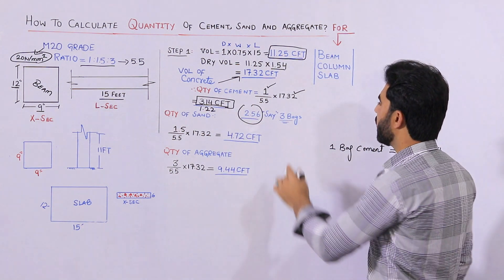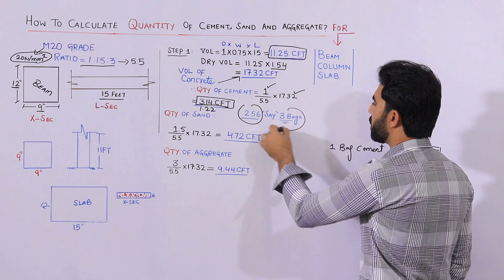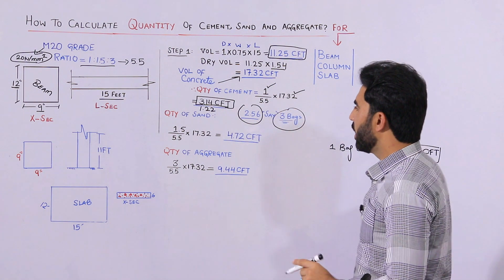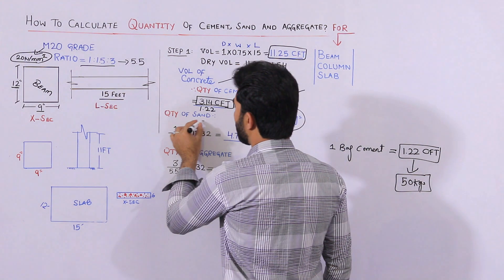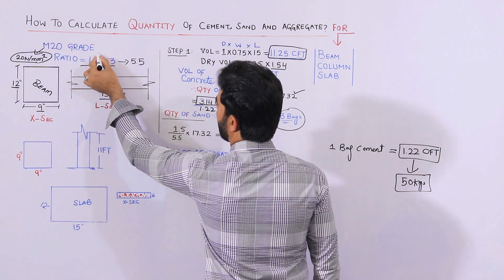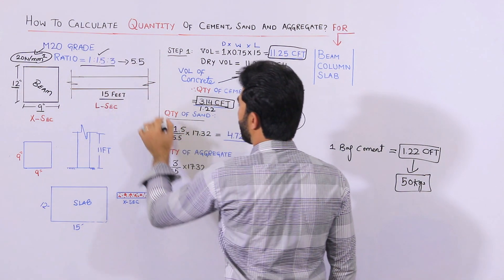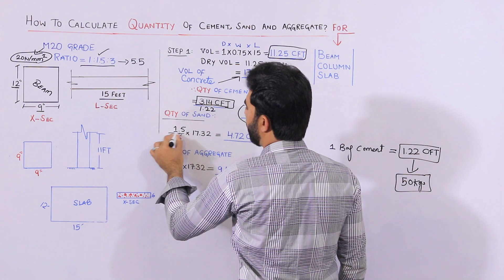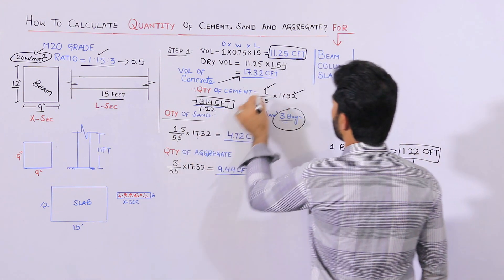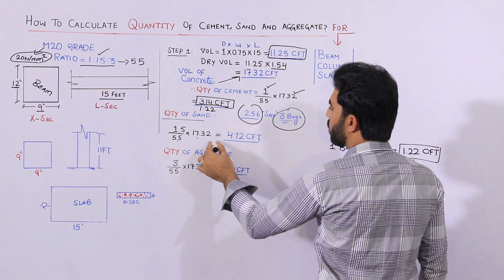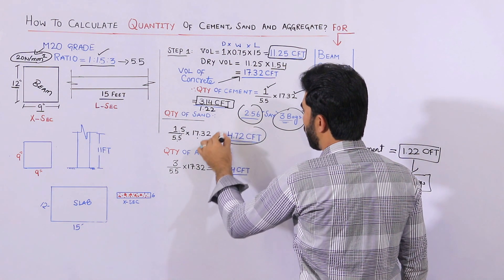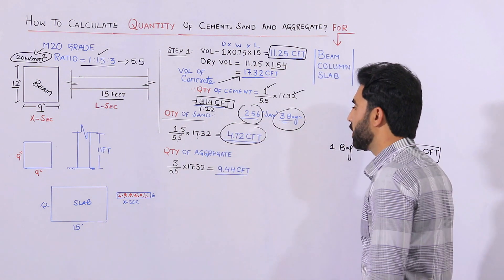Now let me guide you for the quantity of sand. 1.5 parts are sand, so 1.5 divided by 5.5, multiplied by the dry volume of 17.32. When you do the calculation, we require 4.72 cubic feet of sand for the construction of this beam.